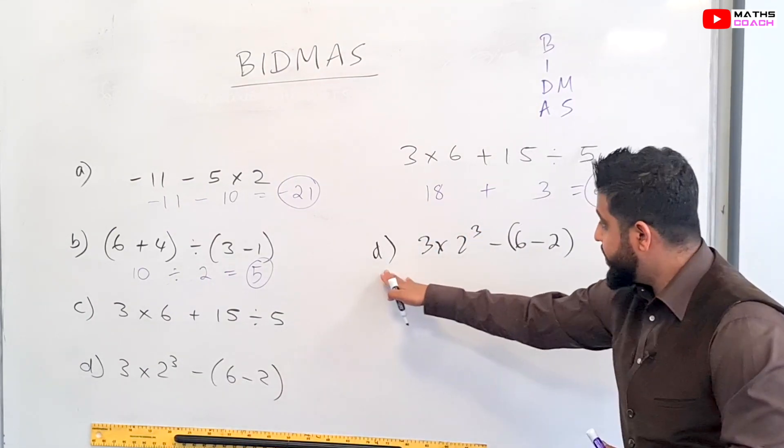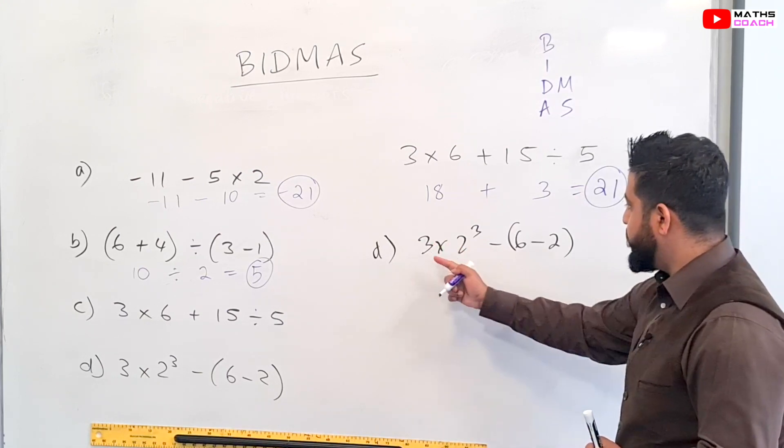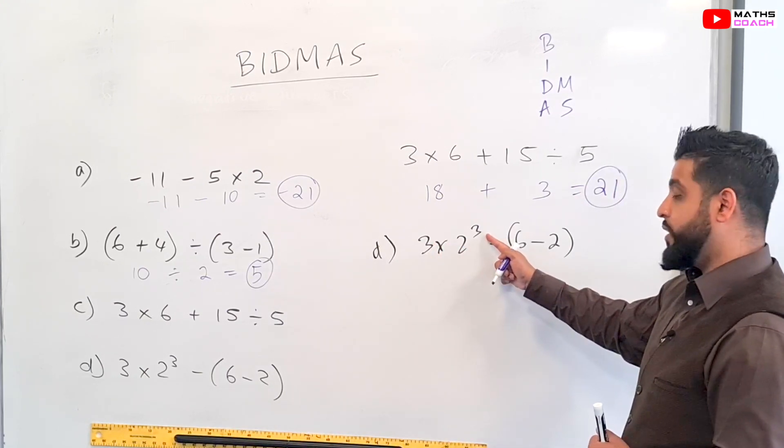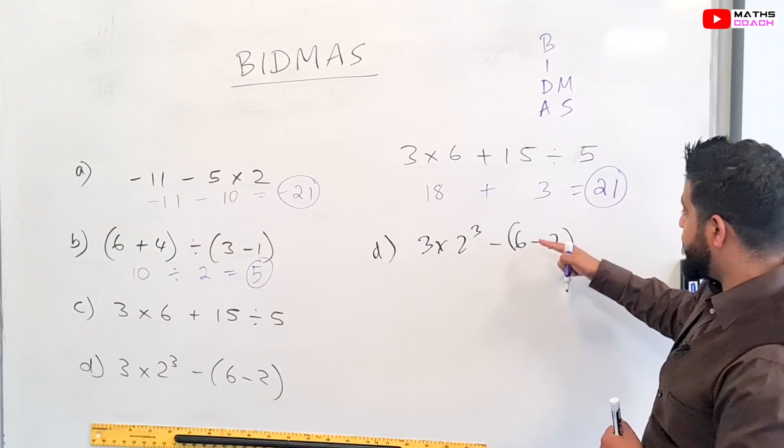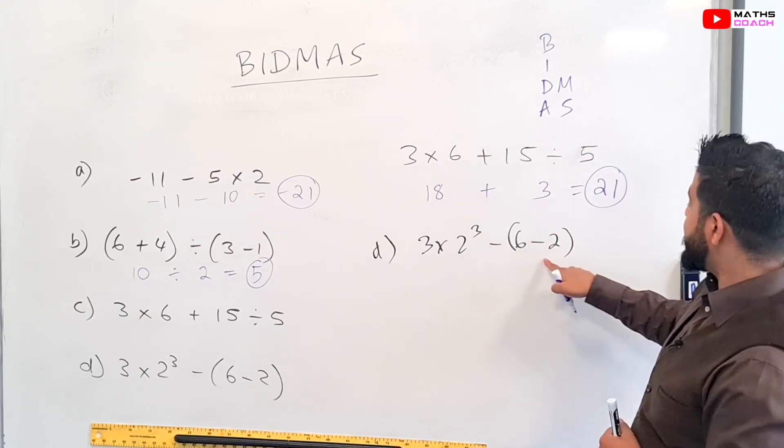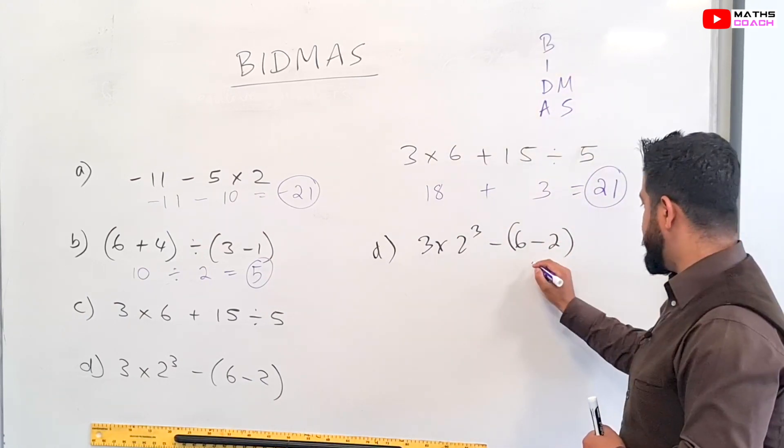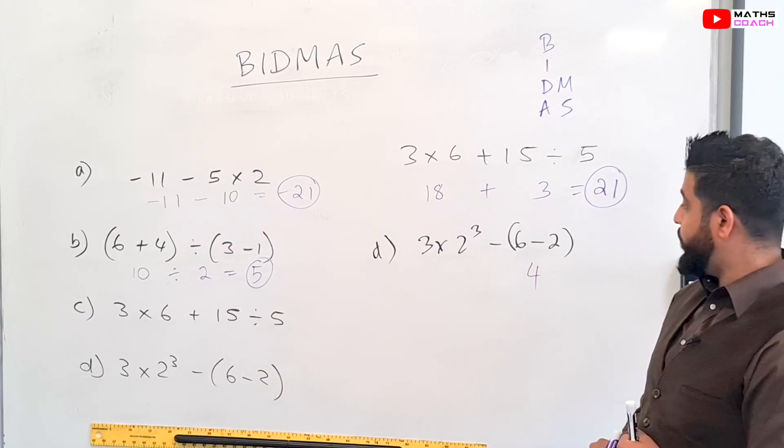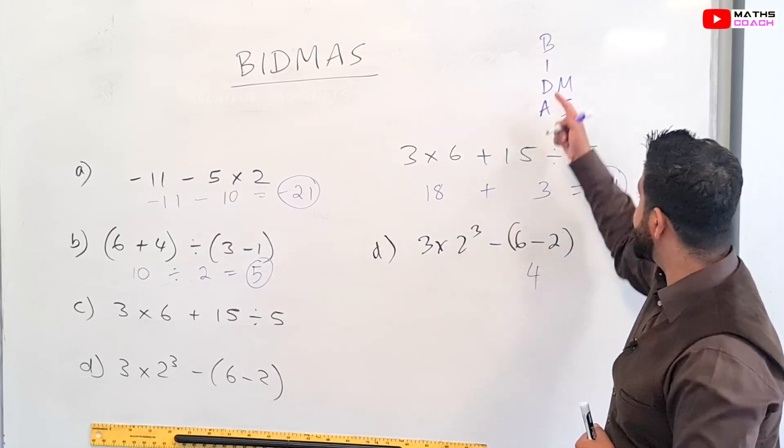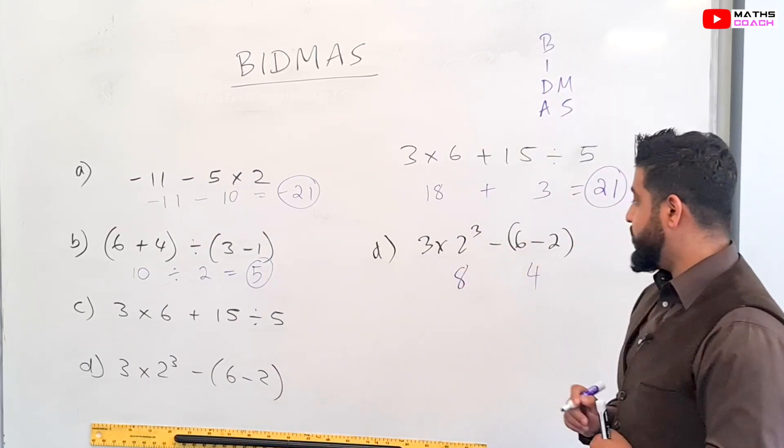So I've just written D on the board here again. So what do we have in this question? We have 3 × 2³ which is an indices, and then we have this bracket which is 6 - 2. So let's deal with our bracket first because the BIDMAS says deal with that. So 6 - 2 is equal to 4. And then 2³, which is an index number here, is equal to 8.